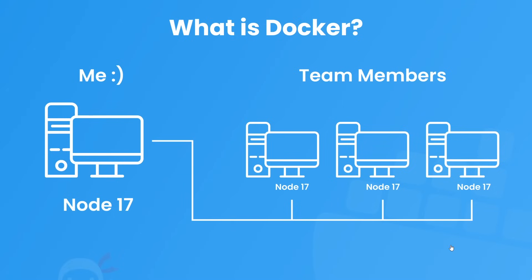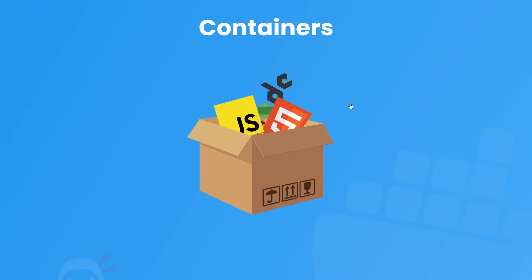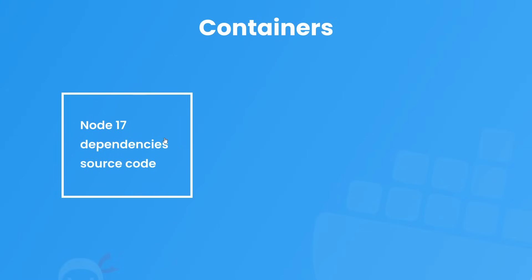You can think of a container as like a box or a package that contains everything our application needs to run — all the source code, dependencies, the correct runtime environment and versions, etc. This container can run our application in isolation, away from any other processes on our computer, so it wouldn't matter what versions of Node or Python or anything else is installed on our computer.